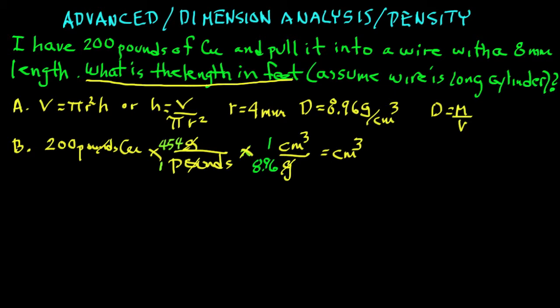8.96 grams is contained in one cubic centimeter. So when we solve for the cubic centimeters, we're going to come out with 10134 cubic centimeters. Use dimension analysis here. You come out with 1.01 times 10 to the fourth cubic centimeters. There's our volume.